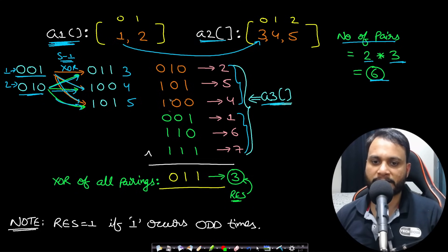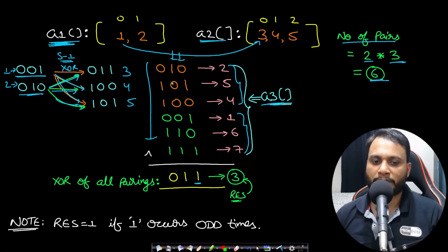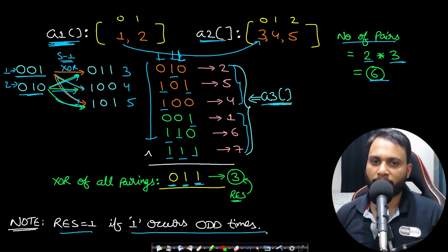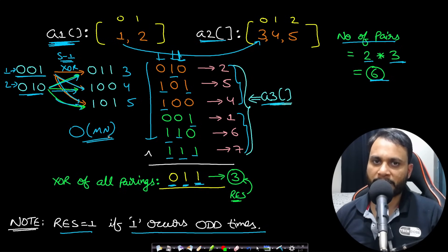So we get 6 items and we need to find the XOR of all of them. The key XOR property is: if a set bit occurs an odd number of times we keep it as 1, and if it occurs an even number of times it becomes 0. In this example, in the first bit position 1 occurs three times so it stays 1; in the second bit position it again occurs three times (odd) so it's 1; in the third bit position it occurs four times so it's 0.